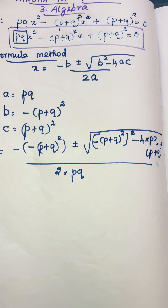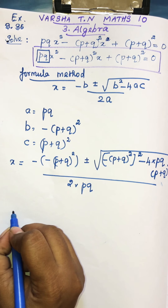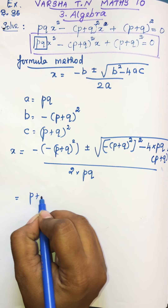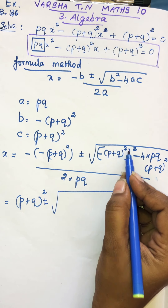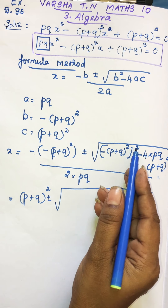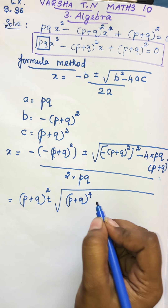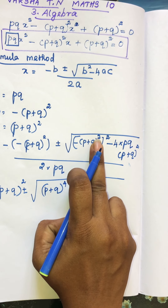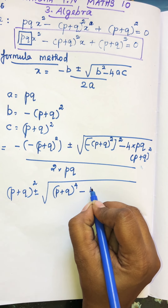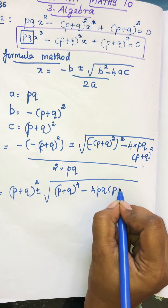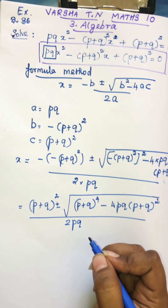Now we substitute all values. Minus of minus gives us plus, so we have (p plus q)² plus or minus root of — the minus under the square gets eliminated, giving power 4 — so (p plus q)⁴ minus 4pq times (p plus q)², all divided by 2pq.